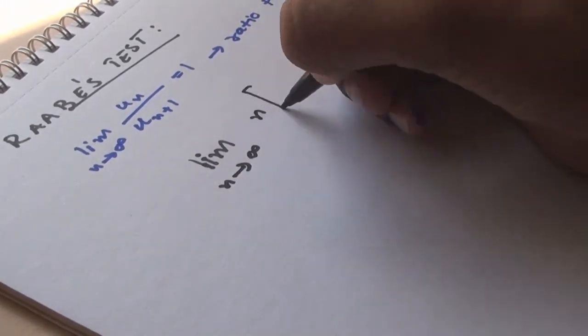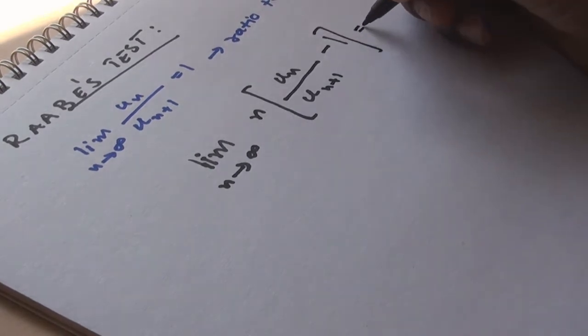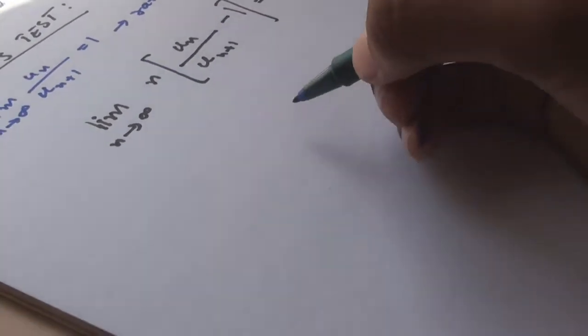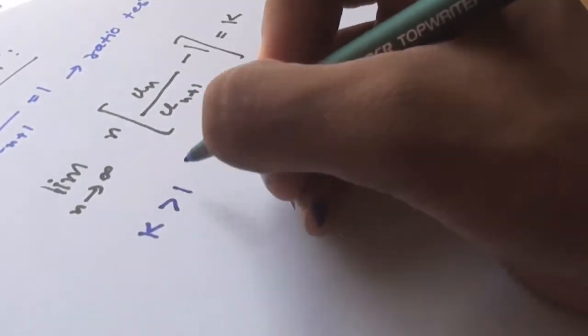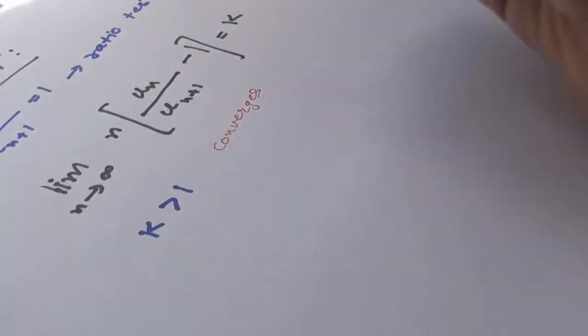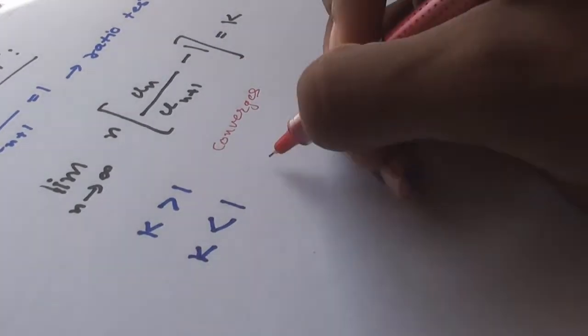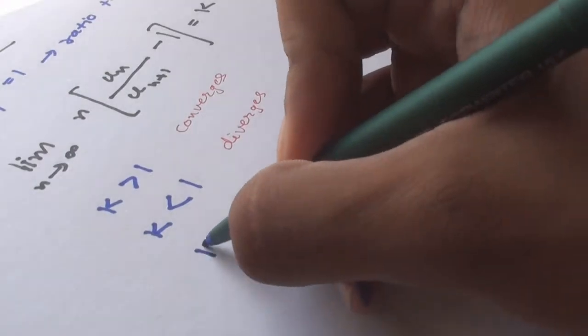Which is if lim[n(un/un+1 - 1)] as n→∞ equals k, then if k > 1, the series converges. If k < 1, the series diverges. Or if k = 1, once again it fails. So, we move on to logarithmic test.